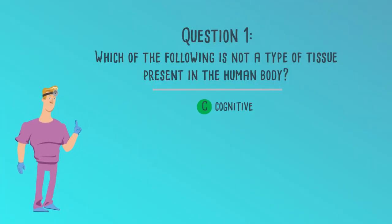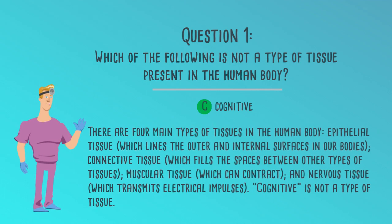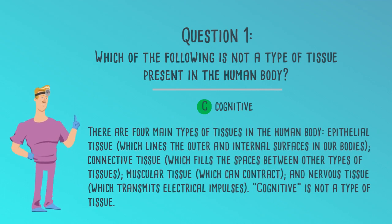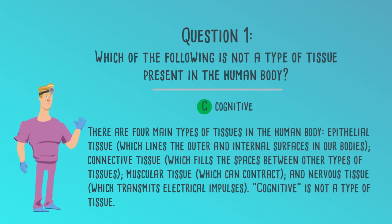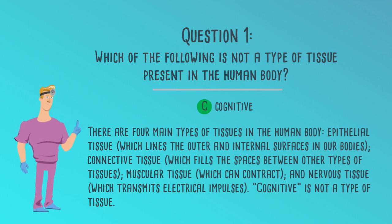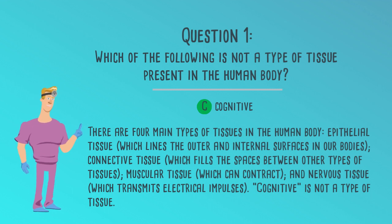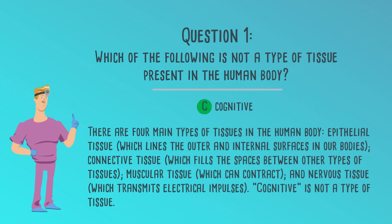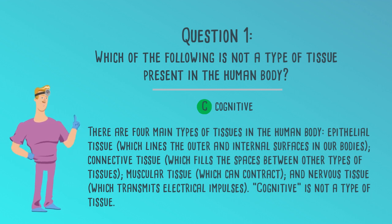The correct answer is C. Cognitive. There are four main types of tissues in the human body: epithelial tissue, which lines the outer and internal surfaces in our bodies; connective tissue, which fills the spaces between other types of tissues; muscular tissue, which can contract; and nervous tissue, which transmits electrical impulses. Cognitive is not a type of tissue. If you had a hard time with this question, be sure you notice the word NOT — it can really make a difference in which answer you choose.